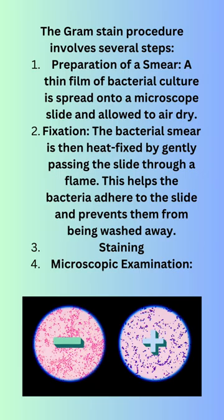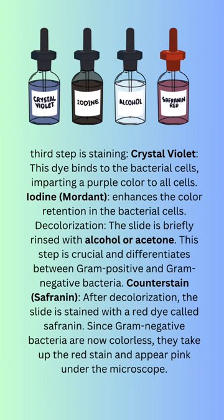The third step is staining. Crystal violet dye binds to the bacterial cells. Iodine, acting as a mordant, enhances the color retention in the bacterial cells.